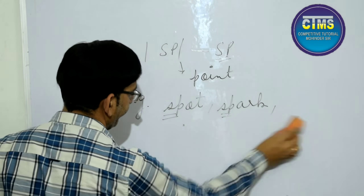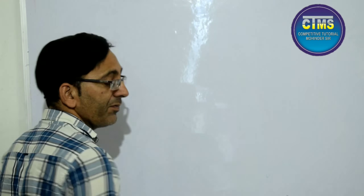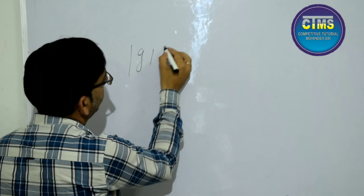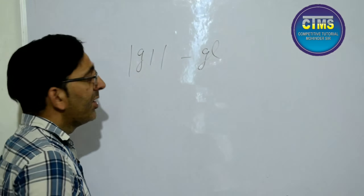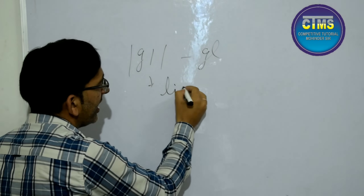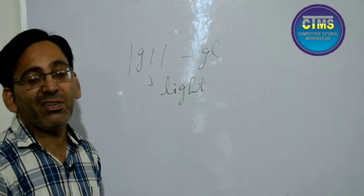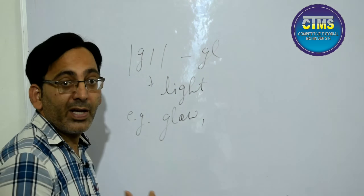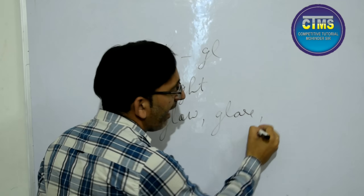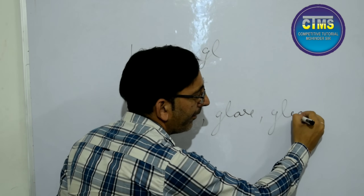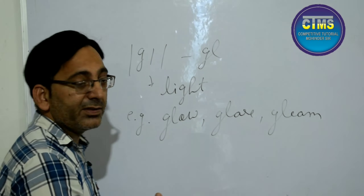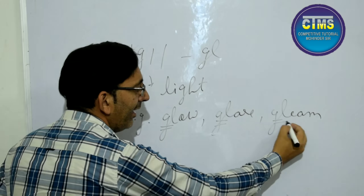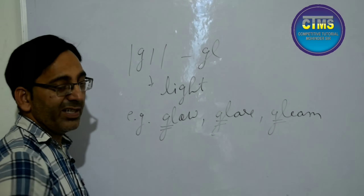Come to the sixth Found Theme. The sixth one involves the sounds g and l — the combination G-L at the beginning of a word. The sounds g and l suggest light; they give the meaning of light. For example, 'glow,' 'glare' — which means bright light — and 'gleam.' In all these words, the combination G-L at the beginning suggests and gives the meaning of light.